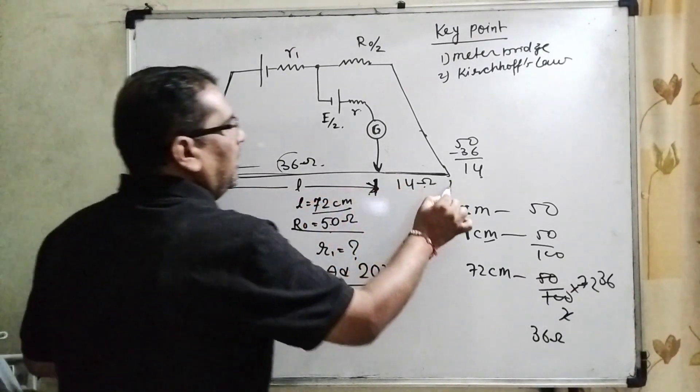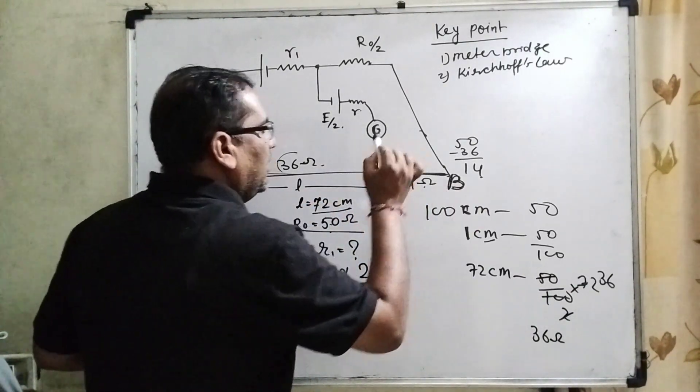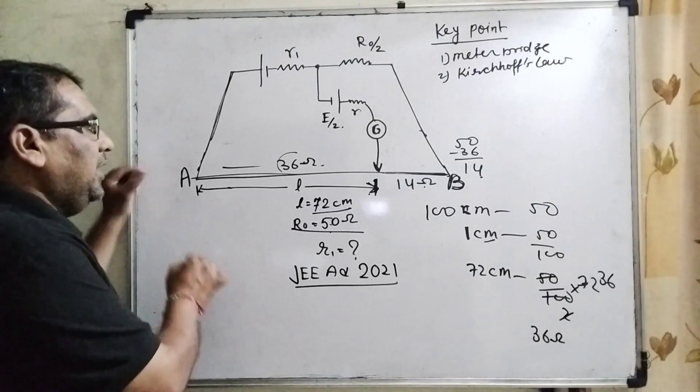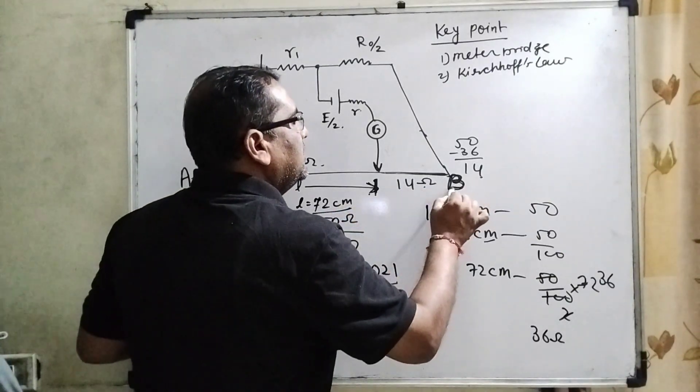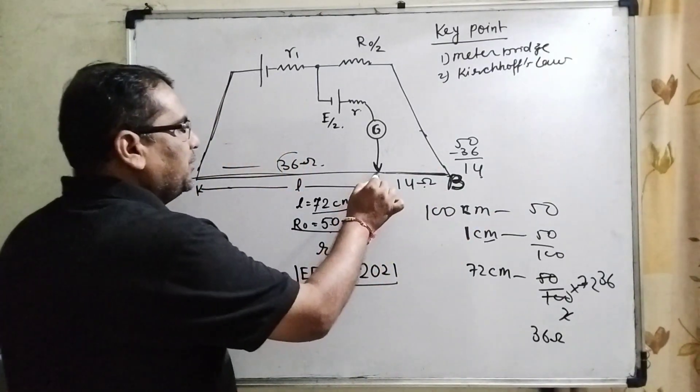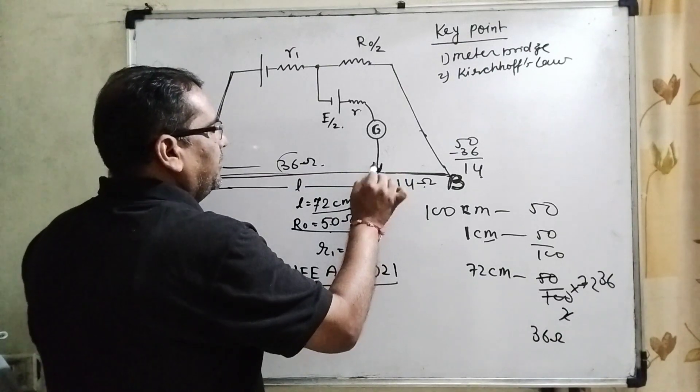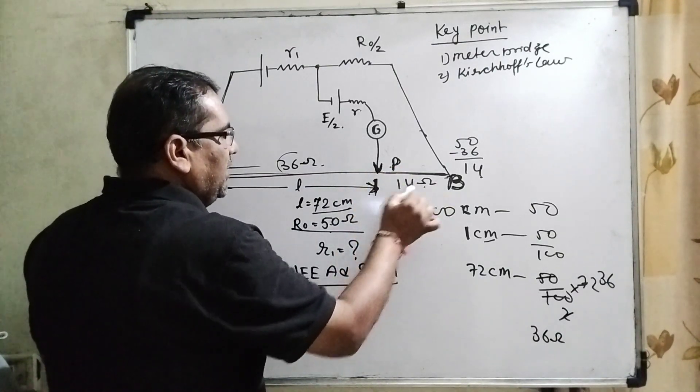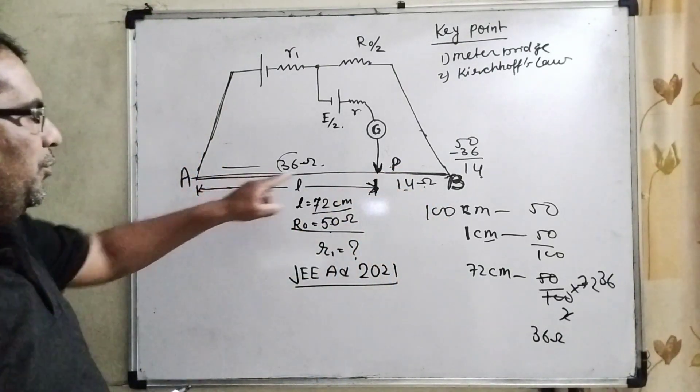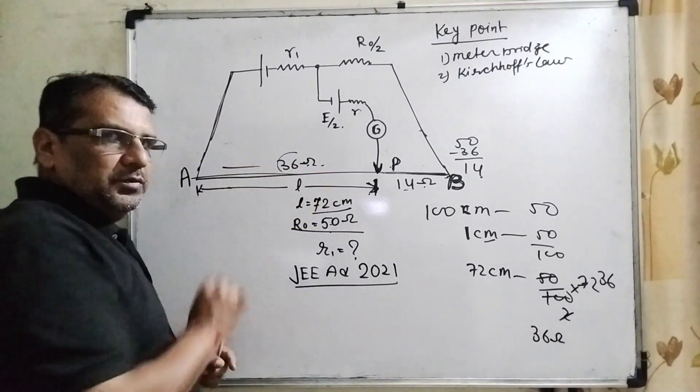Labeling this wire: the net end is A and the last end is B. At this portion, consider P. So here PB is 14 ohms and A to P is 36 ohms.